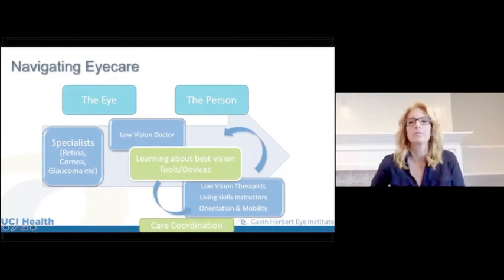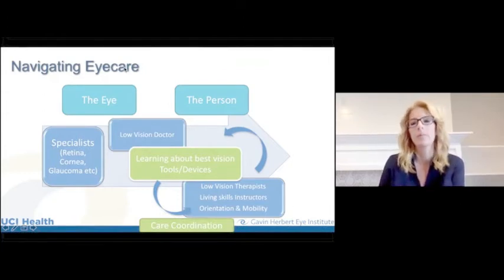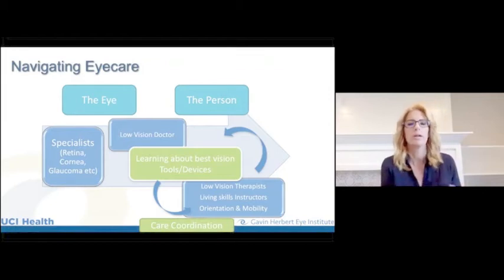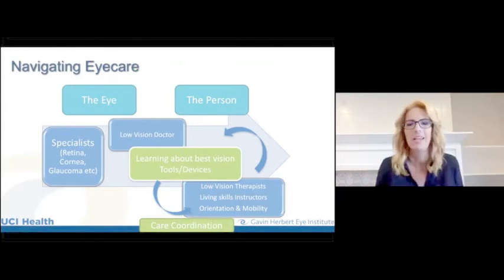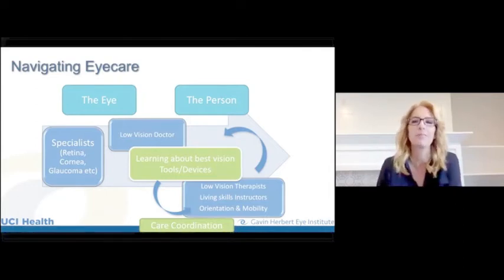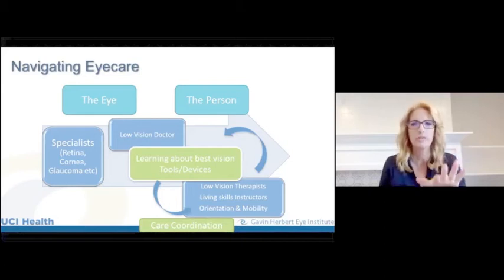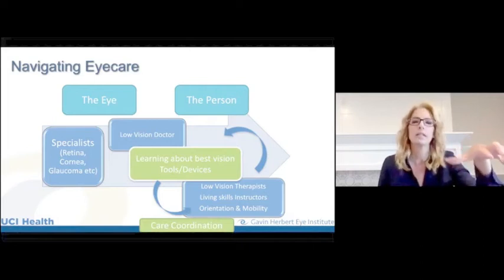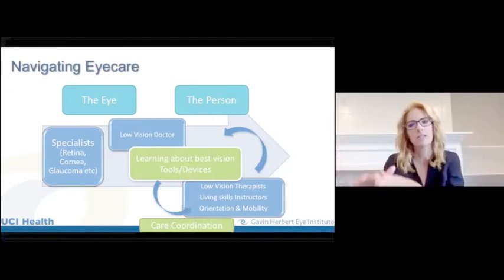Now let's think about how we manage and improve those impacted activities. I'll show a sketch I created that puts things into a picture. On one side is the eye and the disease or condition affecting it; on the other side is the person — their activities and involvement in society. In that framework, there's a specialist managing your condition. As a low vision doctor, I'm on both sides: I need to know about the eye disease and how it's impacting vision function, and also how that impacts reading, seeing signs, and TV.